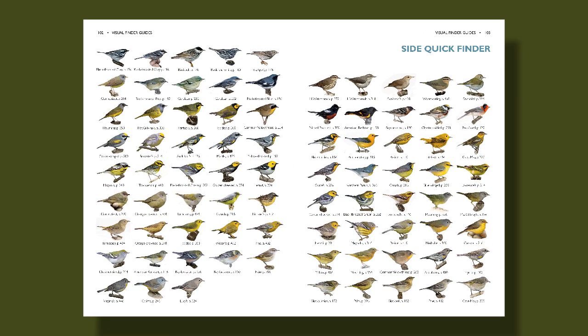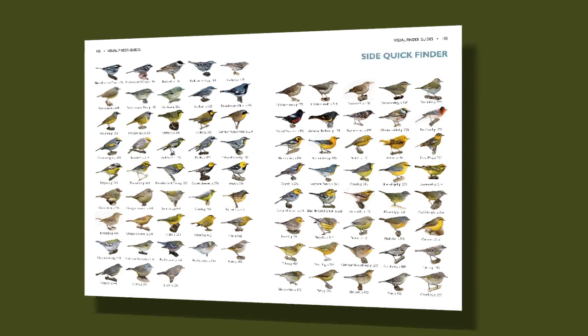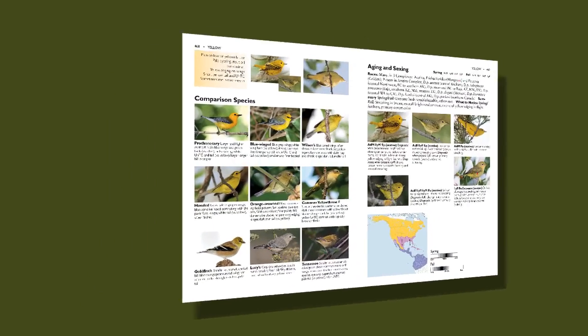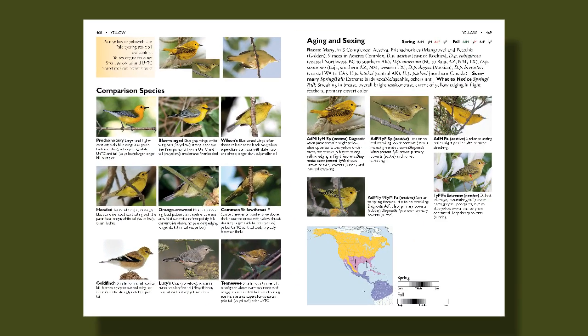Using the finders allows us to make an ID in one or two steps. Either we find the bird we're looking for in the finder itself, or we can go to that species account and use the comparison pages to further refine the ID. For example, if I think the bird I'm seeing is this bird, which is Yellow Warbler, then I can go to that species account and look at the comparison pages to find that in fact the bird I saw was a similar-looking species, Wilson's Warbler.